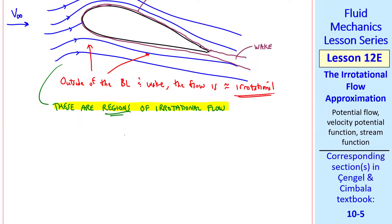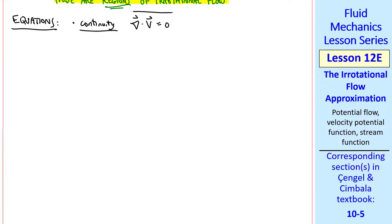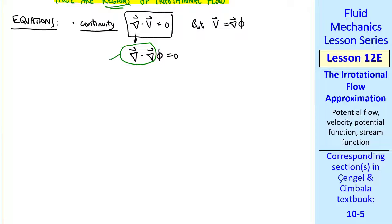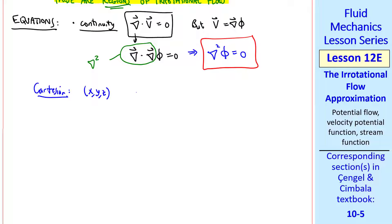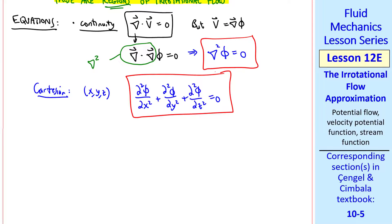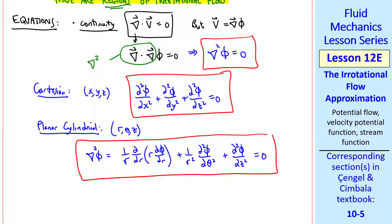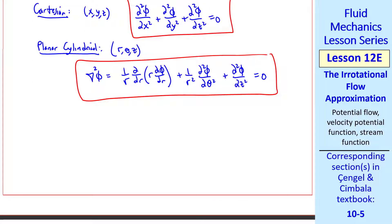Now let's look at the equations for these regions of irrotational flow. For continuity, del dot v equals zero, but v equals the gradient of phi, so del dot del phi equals zero. You should recognize this as the Laplacian operator, so the continuity equation becomes del squared phi equals zero — the Laplace equation for phi. In Cartesian coordinates we expand the Laplacian accordingly, and similarly in planar cylindrical coordinates.